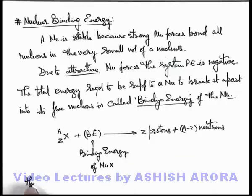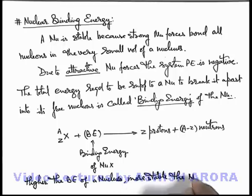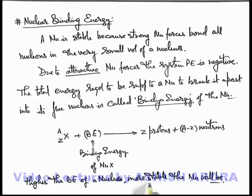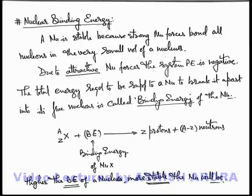About binding energy we can write that higher the binding energy of a nucleus, more stable the nucleus will be. If there is a highly stable nucleus then its potential energy is more negative, or we can say it is more stable because of high attraction among its nucleons. So obviously to break it apart we need more energy. So binding energy of a nucleus is basically a measure of its stability - the overall energy required to split it into all its nucleons.